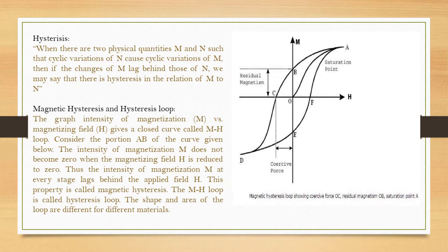In general, what is hysteresis? When there are two physical quantities M and N, and cyclic variations of N cause cyclic variations of M, but the changes of M lag behind those of N, we say that there is hysteresis in the relation of M to N. This will be clear when we study the magnetic hysteresis loop.